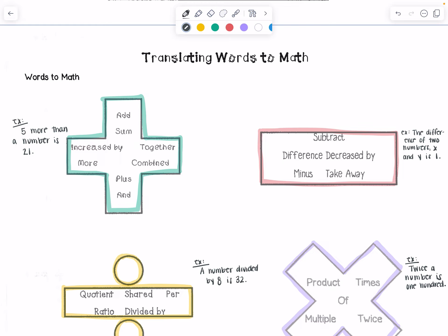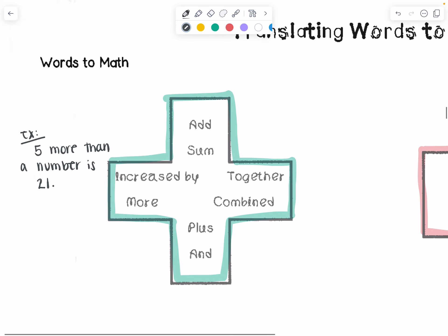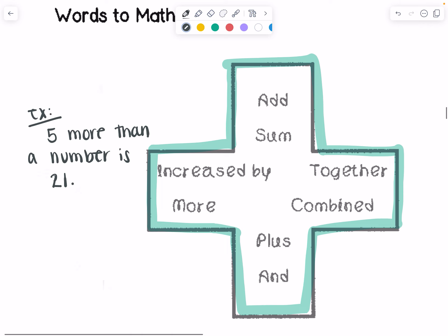So I went through and I made an example for each of them. Any number that you see inside this plus sign is going to alert you that the operation is going to be addition. So here's an example, 5 more than a number is 21.